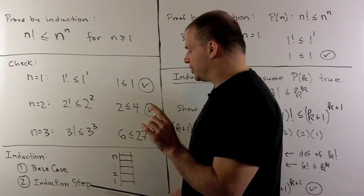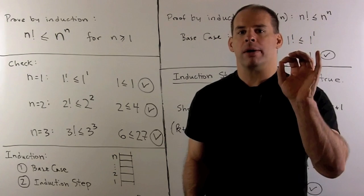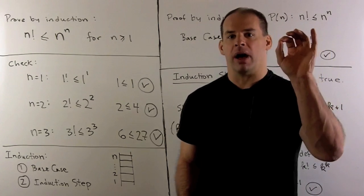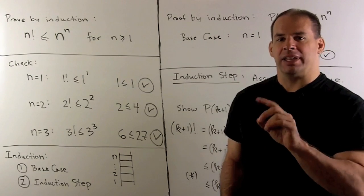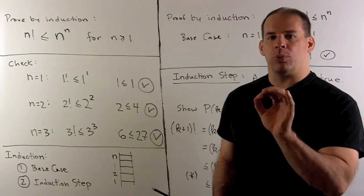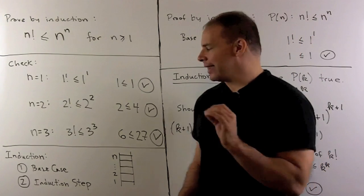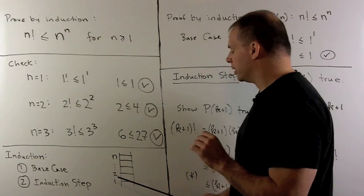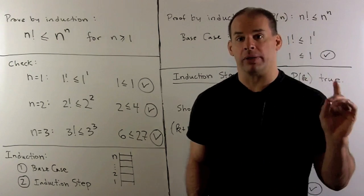Then we're going to have an induction step. So what the induction step says, if I can get onto one rung, I have a rule that gets me to the rung above it. So the way we translate that, if the kth statement is true, then we have an argument that shows the k plus first statement's true. And that's our induction step. So we get on the ladder, and then I have a rule that lets me climb to any rung that I want.